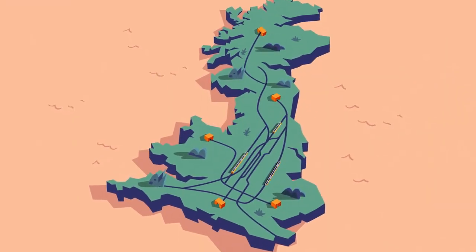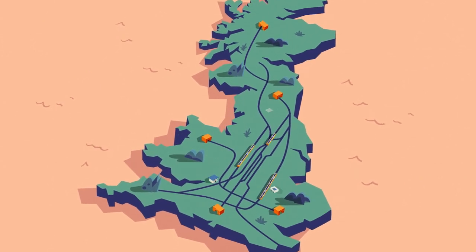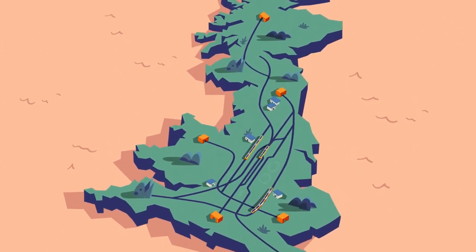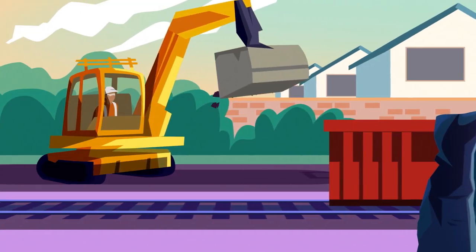The railway touches almost every community in Britain. We're next door neighbour to about 22 million people. Maintaining and operating our network 24-7 is an important part of what we do.